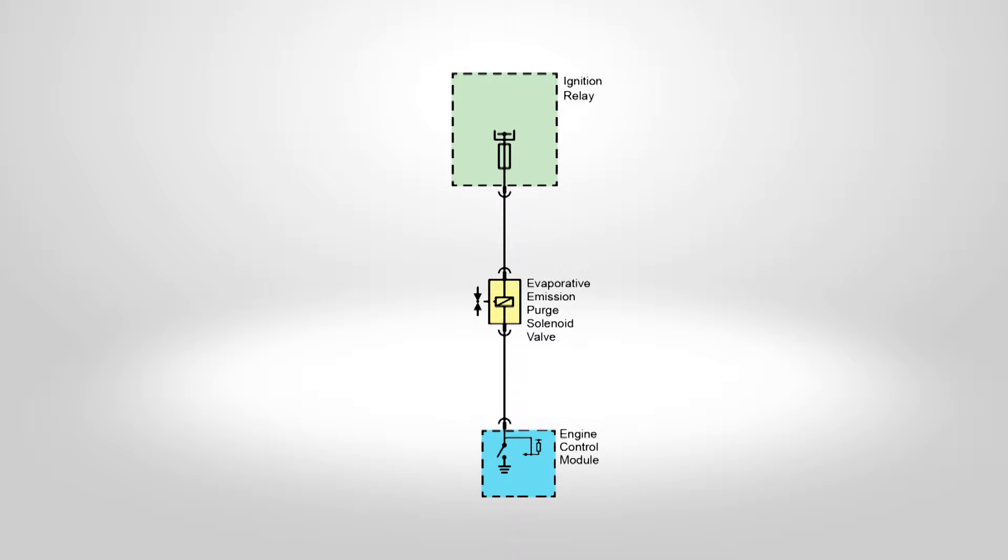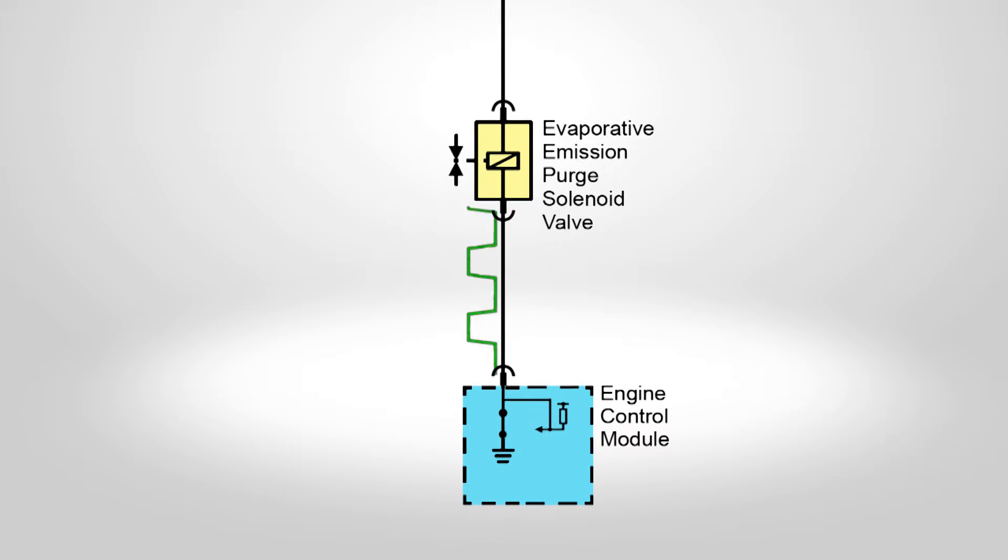The EVAP purge solenoid valve is pulse width modulated. The engine control module, or ECM, controls the solenoid valve by grounding the control circuit with a solid-state device called a driver.